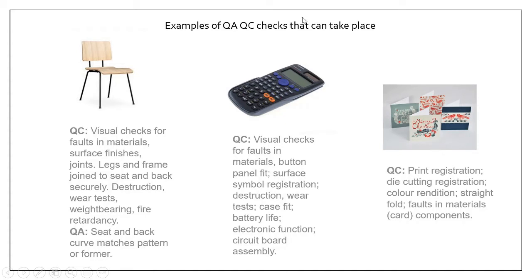For a calculator, quality control checks include visual checks for faults, checking materials, checking the button panel fits, and checking the surface is clean. Destruction checks ensure the plastic casing can take wear and tear and doesn't break into small pieces. You also check battery life, electrical function, and that the batteries aren't easily accessible without additional tools — to prevent someone damaging the circuits or injuring themselves. For cards, quality control checks include print registration, die cutting accuracy, ensuring everything is straight and cut correctly, folds are in the right place, and there are no faults like misprints. Different products require different tests.